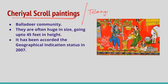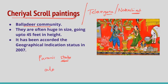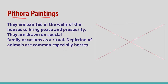Chariel scroll painting is indigenous to the Telangana state and is a type of Nakashi art. The scrolls depict a continuous story, like comics or ballads, by the Baladir community. Common themes are Hindu epics and Puranic stories. The artist uses scroll painting to narrate stories along with music as they move to different places. They are often huge in size, going up to 45 feet in height, and have been accorded Geographical Indication status in 2007.